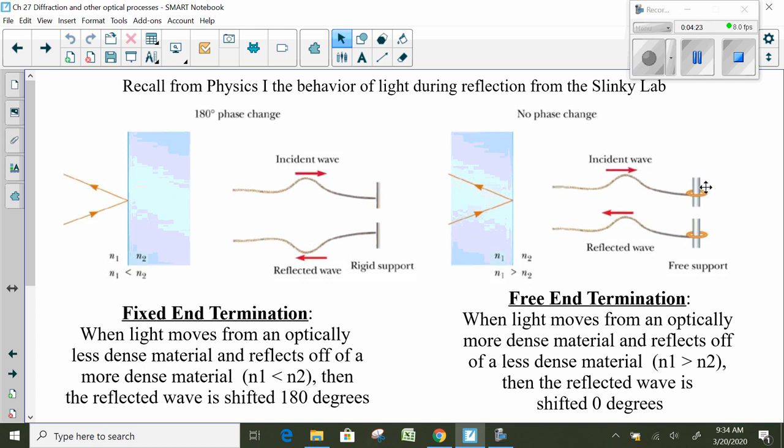The wave came back on the same side, so there was no phase shift. The incident wave and the reflective wave are not phase shifted, and we call this free end termination. Again, that only happens when you go from something from a high density into a low density. There's no phase shift. That's super important for understanding what's going to happen when we do thin film interference.